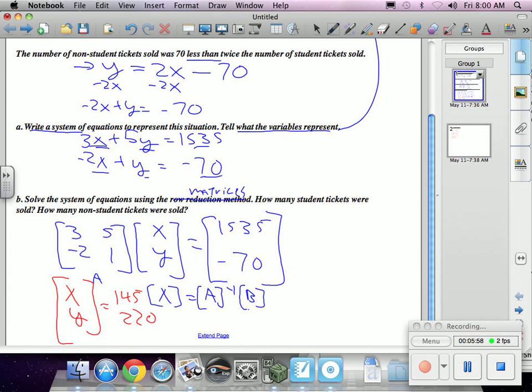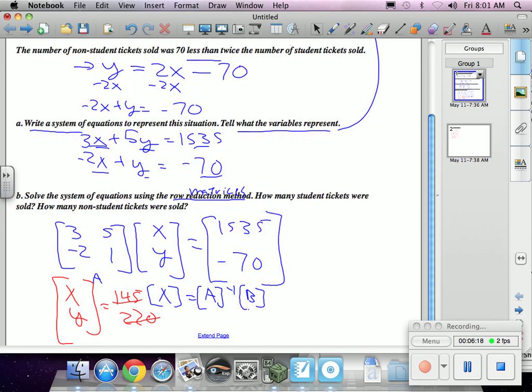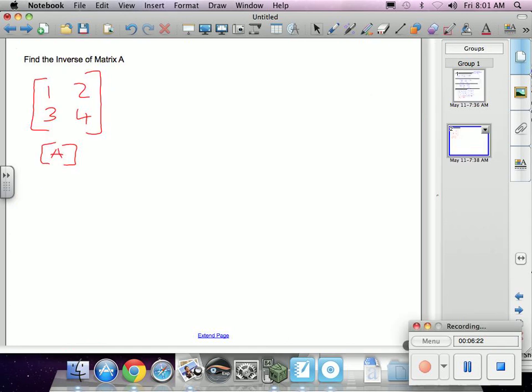All right. So in other words, there were 145 student tickets sold and 220 non-student tickets sold. And like I said, the big thing with all of these problems is translating and getting that system of equations, and then turning that into matrices.